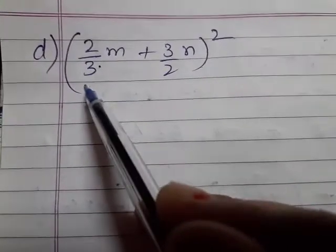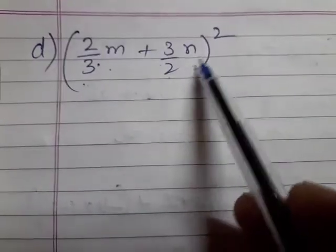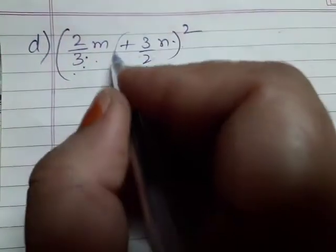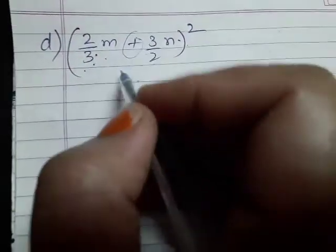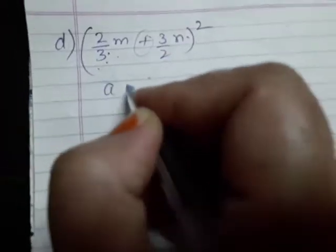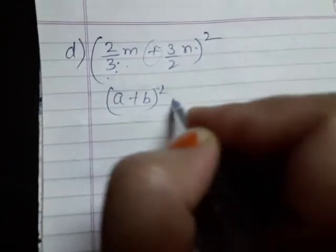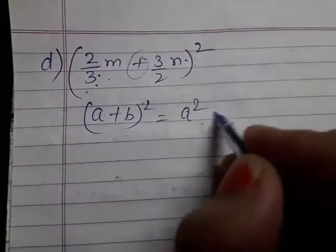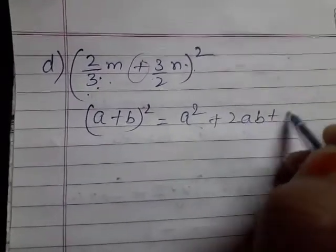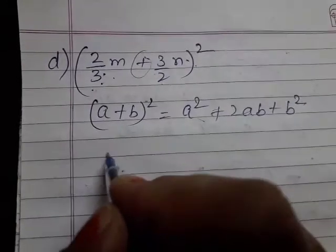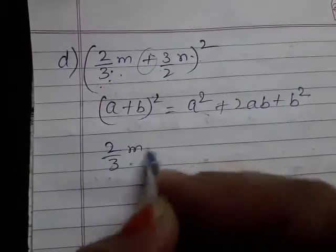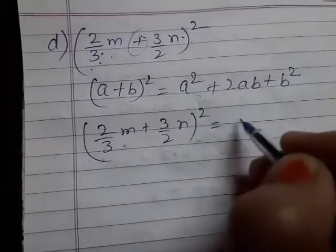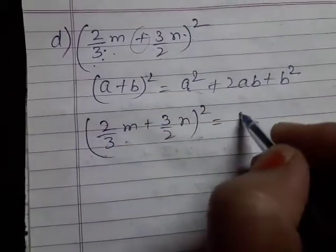Next, part D: we have (2/3 m + 3/2 n)² as a whole square. Here the sign is plus, so we use (a+b)² = a² + 2ab + b².